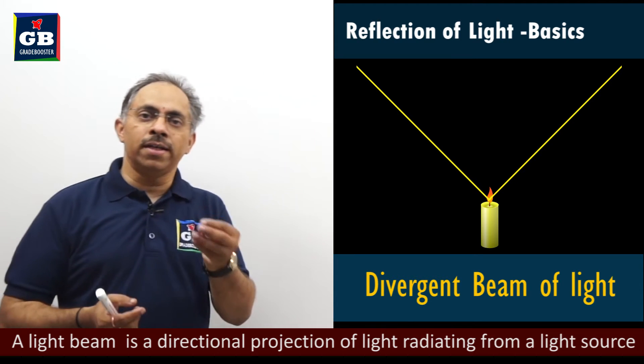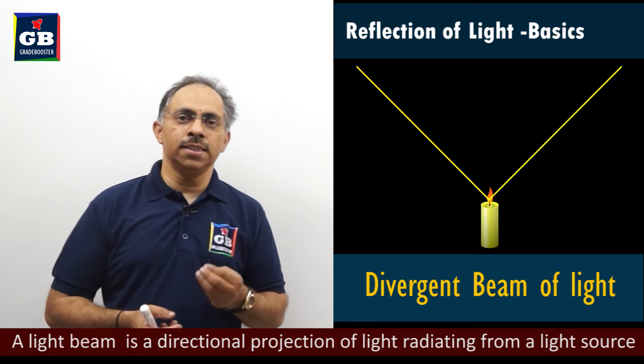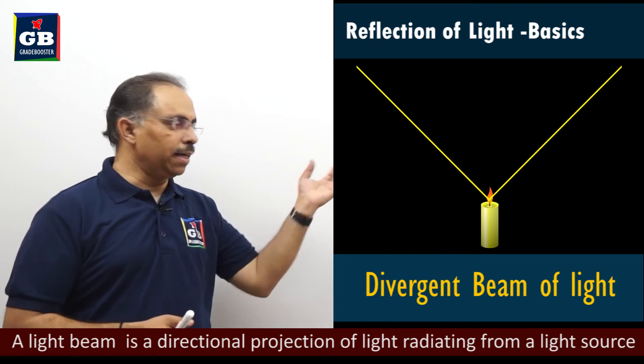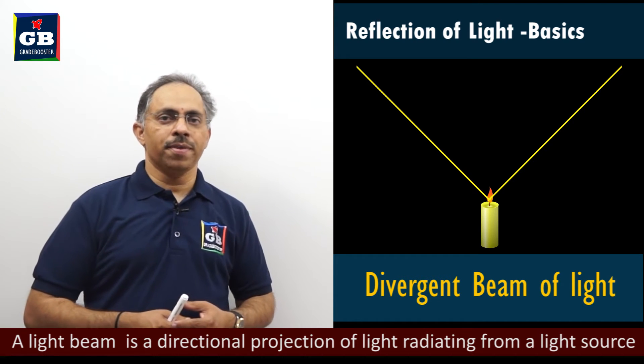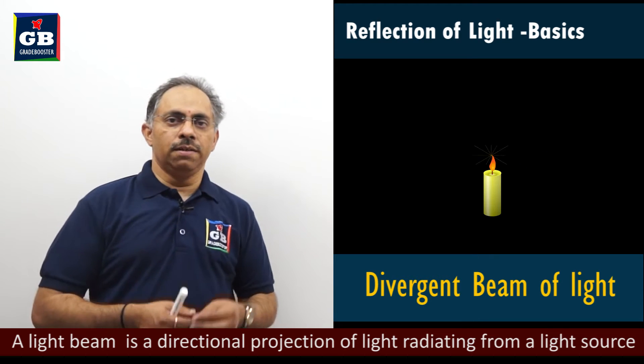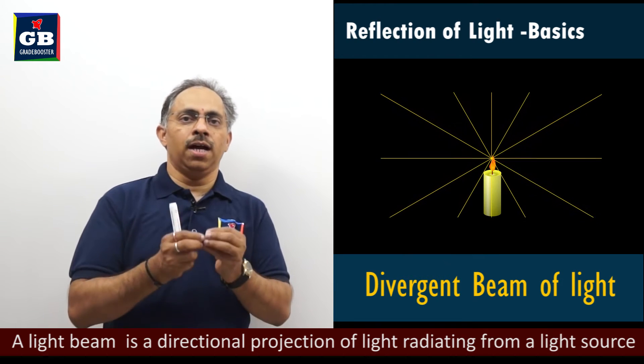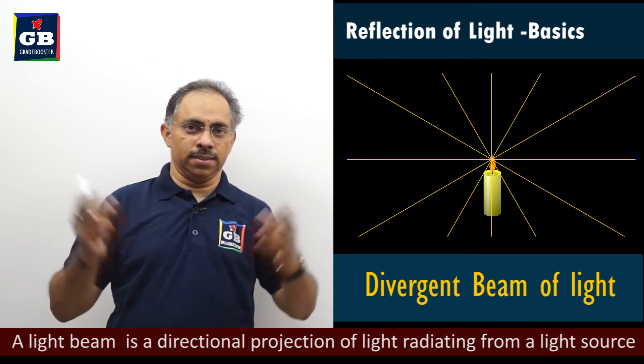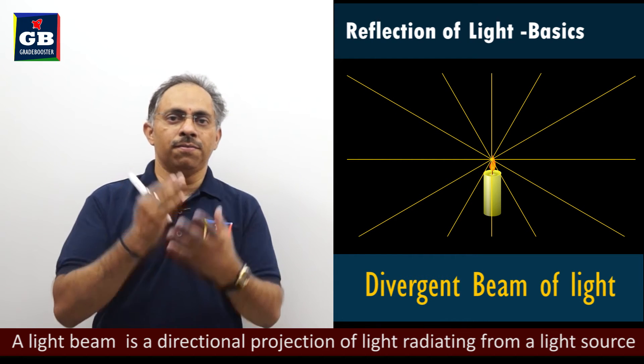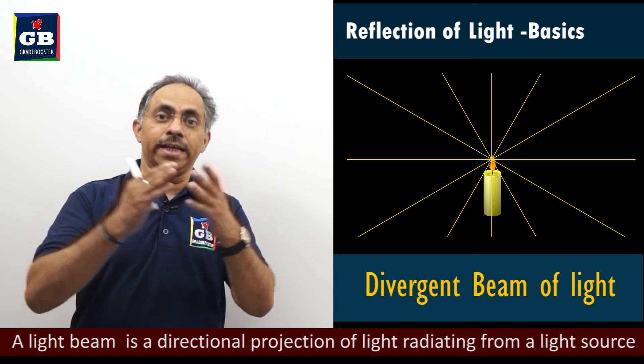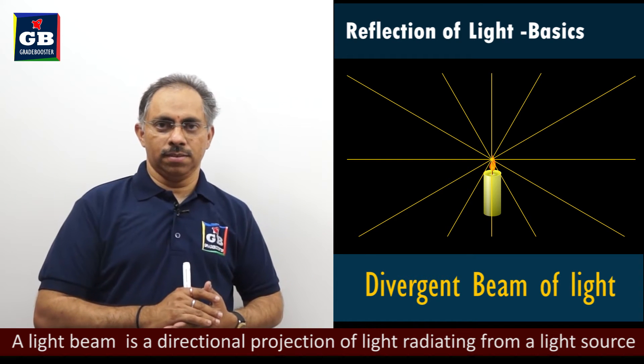Any light source, you can say, pointed source, pointed source in the sense, a small one, like a candle here, shown here. So this is like a pointed source. From the pointed source, we have light emanating from in all directions. So the beam of light, what you observe here is a divergent beam of light.